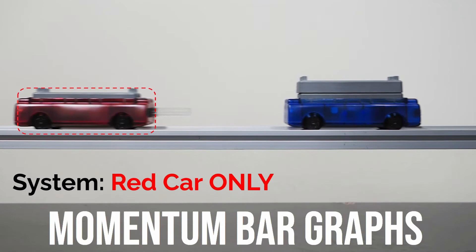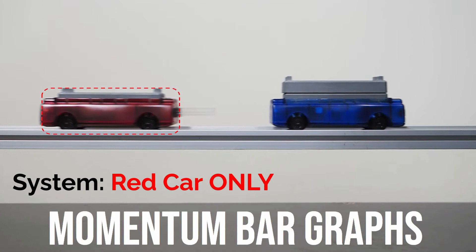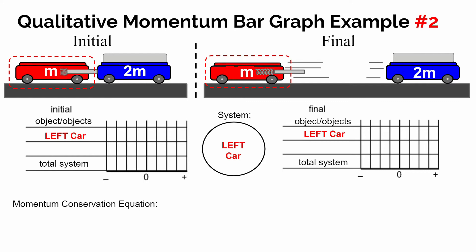Now let's see how this looks if we change our system definition to just the left (red) car. We draw a dashed line around the red car and ask: what's going on with its momentum before the explosion, after the explosion, and is there any change? In the beginning, the left car is not moving so it has no momentum — zero. The system as a whole has zero momentum. After the event, the red car is moving to the left; it has a negative velocity, which means its momentum is also negative.